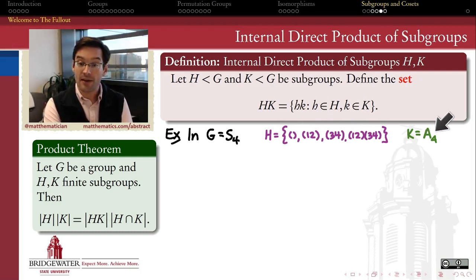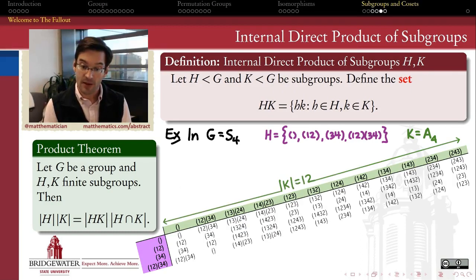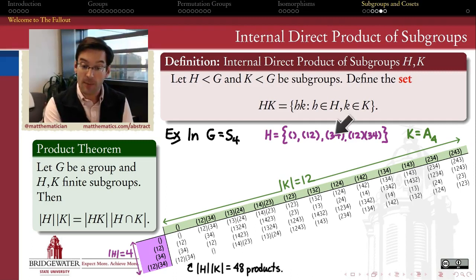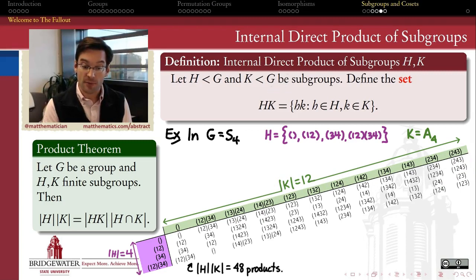My other subgroup K is the alternating group on four symbols, A4 — a much larger subgroup of order 12. I want to understand what this internal direct product set HK actually contains. Because it consists of every element of H multiplied by every element of K, there are 4 times 12 equals 48 possible products in total. So all 48 of those products are elements of this internal direct product.